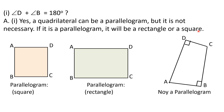If it is a parallelogram, it will only be a rectangle or a square; otherwise the quadrilateral will not be a parallelogram. Angles D and B are opposite angles. In a parallelogram, opposite angles must be equal. If they also add up to 180 degrees, each must equal 90 degrees. So it can only be a square or a rectangle, since only those have all angles equal to 90 degrees.